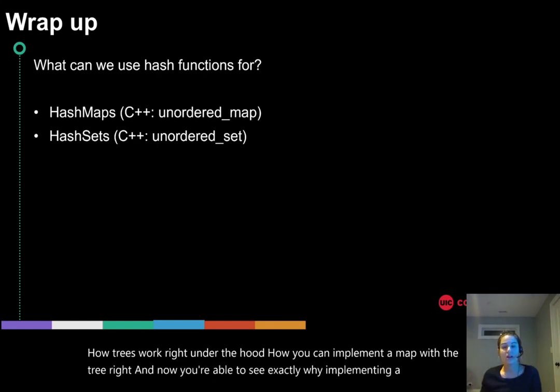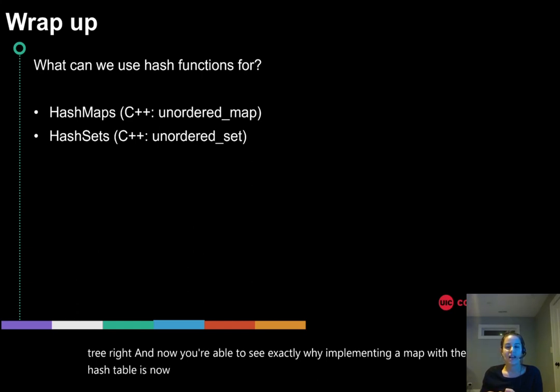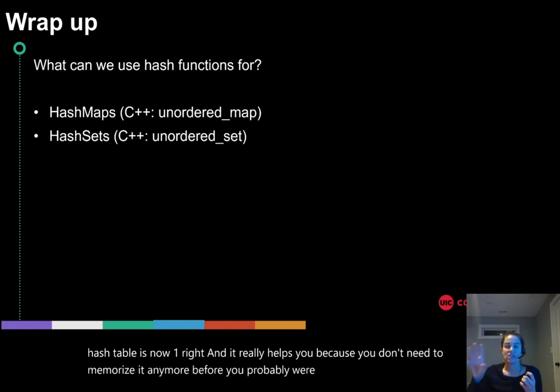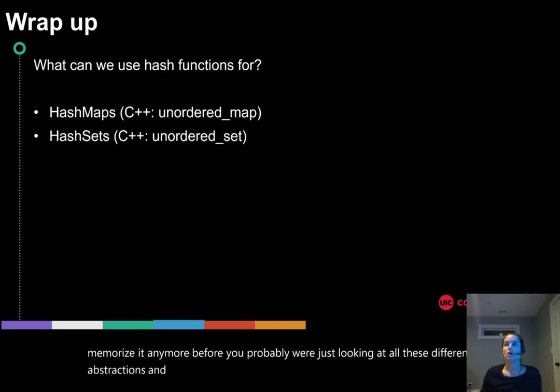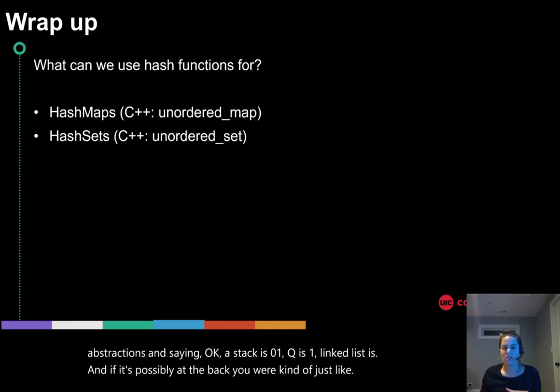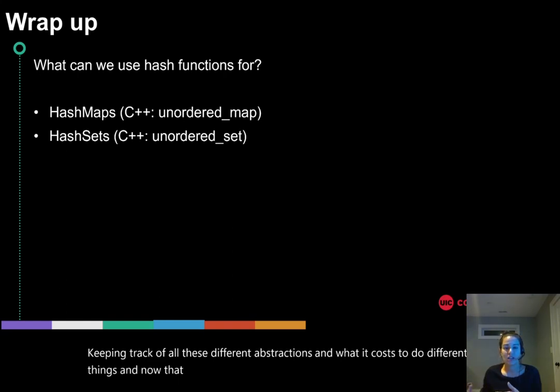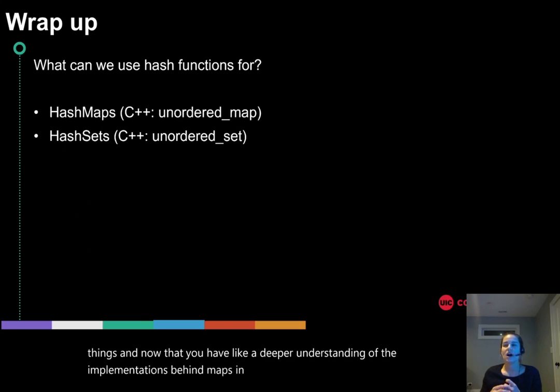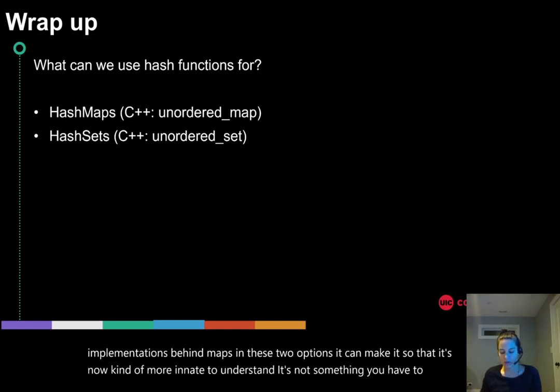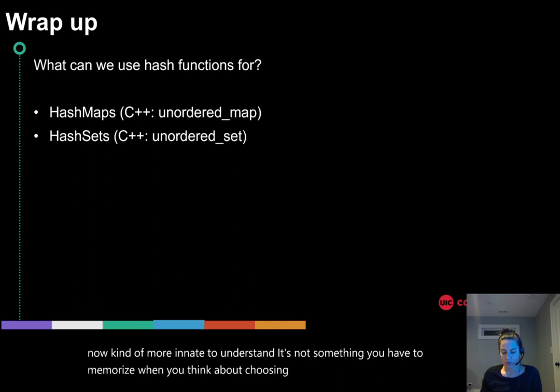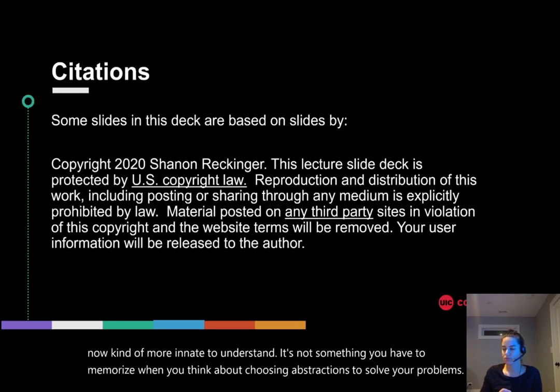It really helps you because you don't need to memorize it anymore. Before, you probably were just looking at all these different abstractions and saying okay, a stack is O(1), a queue is O(1), a linked list is O(n) if it's possibly at the back. You were kind of just keeping track of all these different abstractions and what it costs to do different things. Now that you have a deeper understanding of the implementations behind maps in these two options, it can make it so that it's more innate to understand. It's not something you have to memorize when you think about choosing abstractions to solve your problems. That's it.